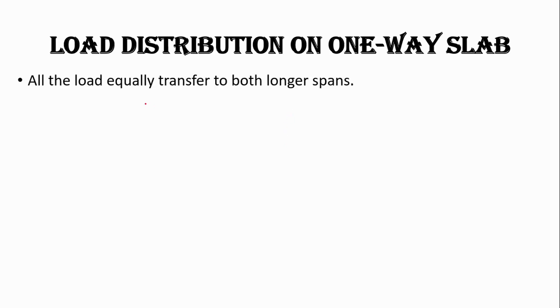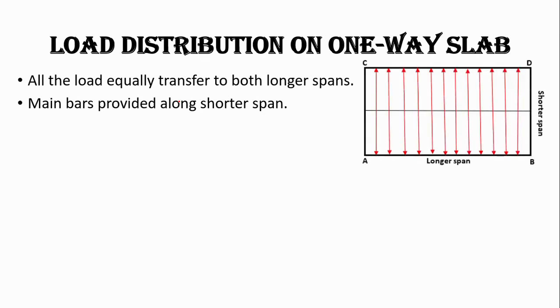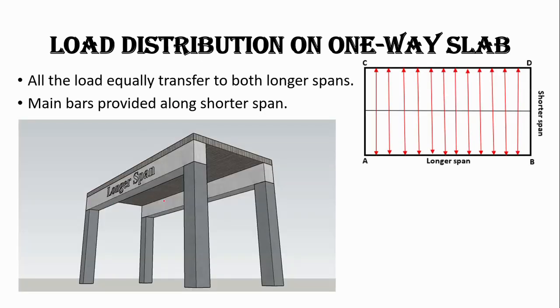Let's discuss the load distribution on a one-way slab. All the load is equally transferred to both longer spans, and we provide the main distribution bars along the shorter span. In a one-way slab, all the load is transferred to the longer span, so we do not require any beam support in the shorter span.